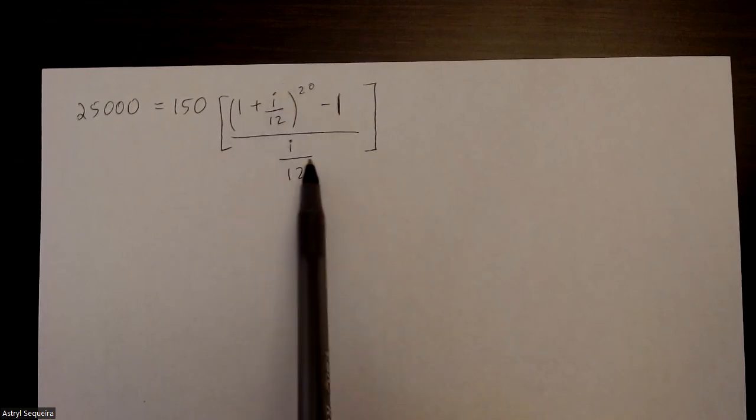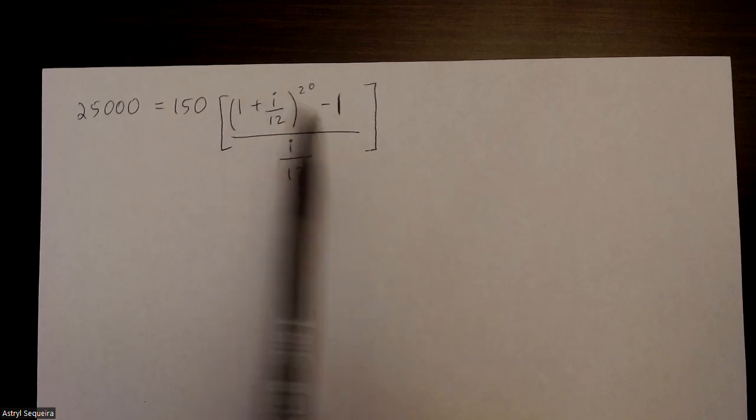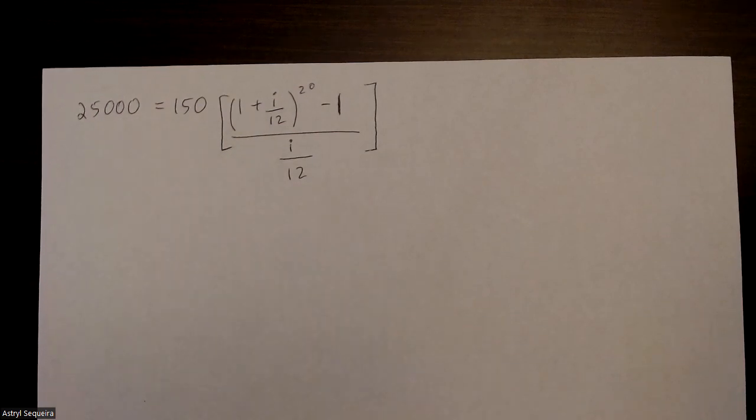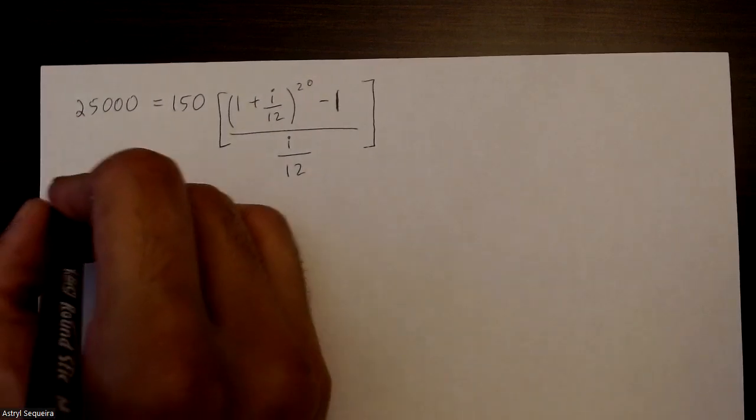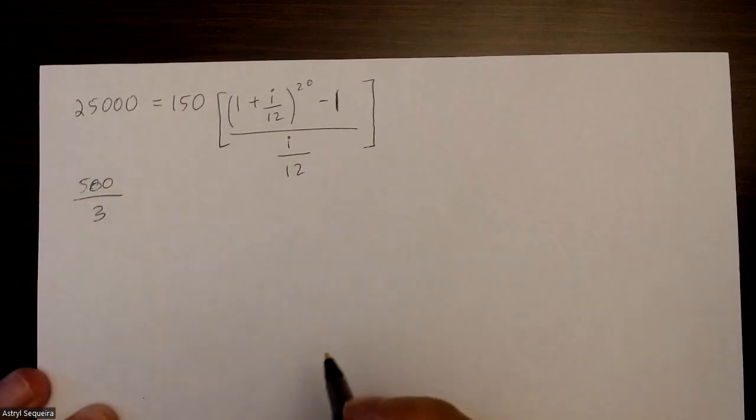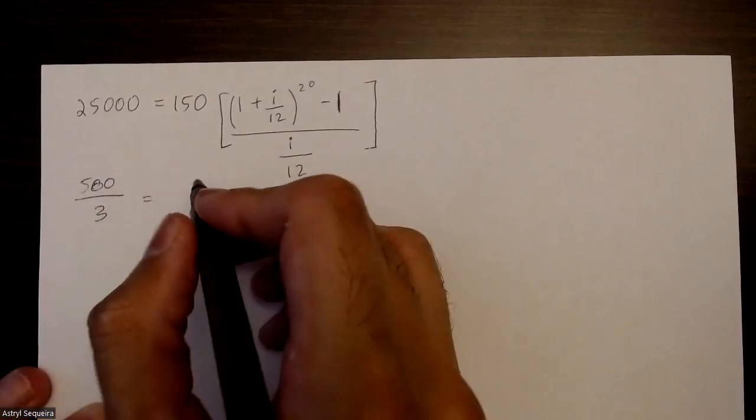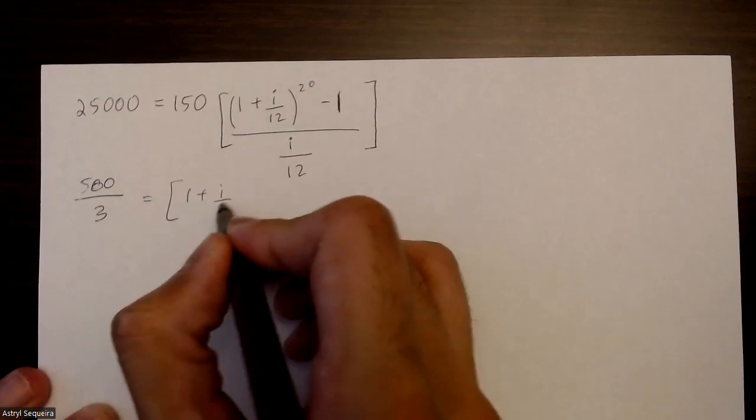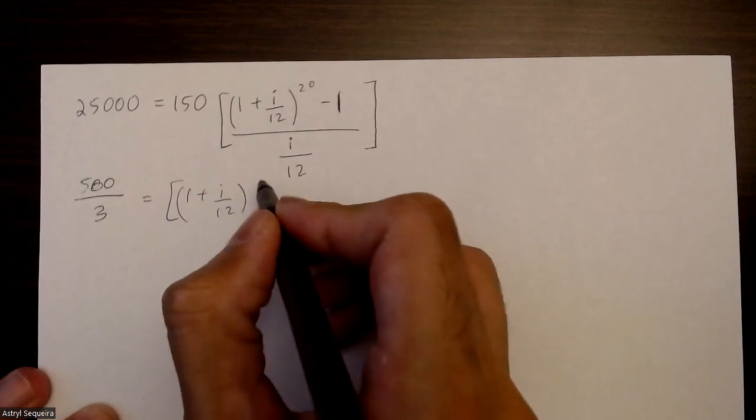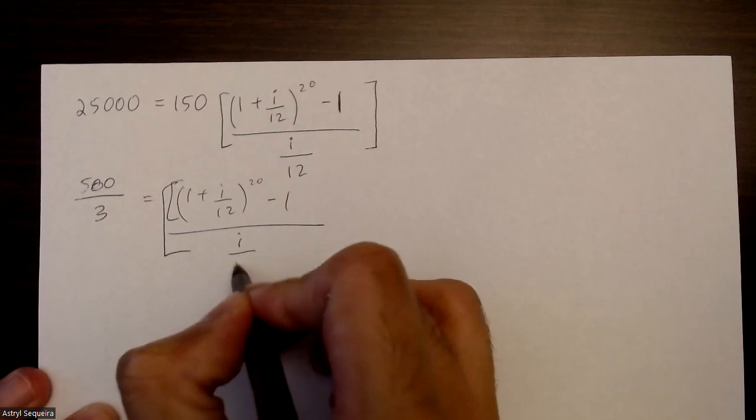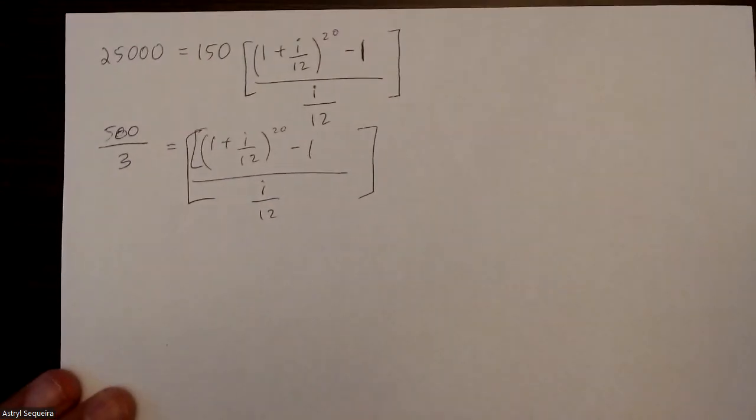So I want to try and isolate the i, but is that even possible? I'm going to start by moving the 150 to the other side, dividing it on the other side. So 25,000 divided by 150 is just 500 over 3.